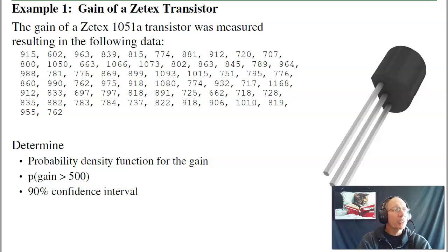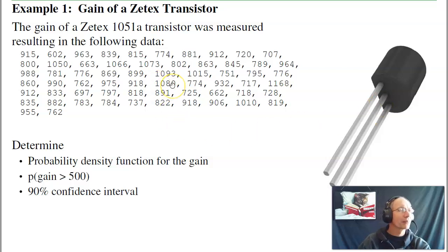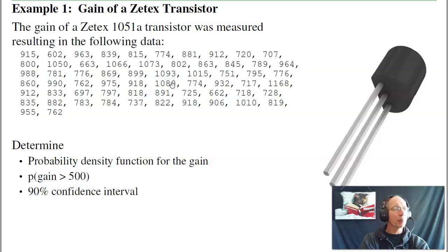Probably the easiest way to illustrate the t-distribution is with an example. This is a ZTEX 1051 transistor. I measured the gain of all the transistors in a bin and wound up with some data. Given that data, I want to calculate the probability density function, find the probability that any given transistor has a gain of at least 500, and find the 90% confidence interval for any given transistor's gain. That I can do with the t-test.